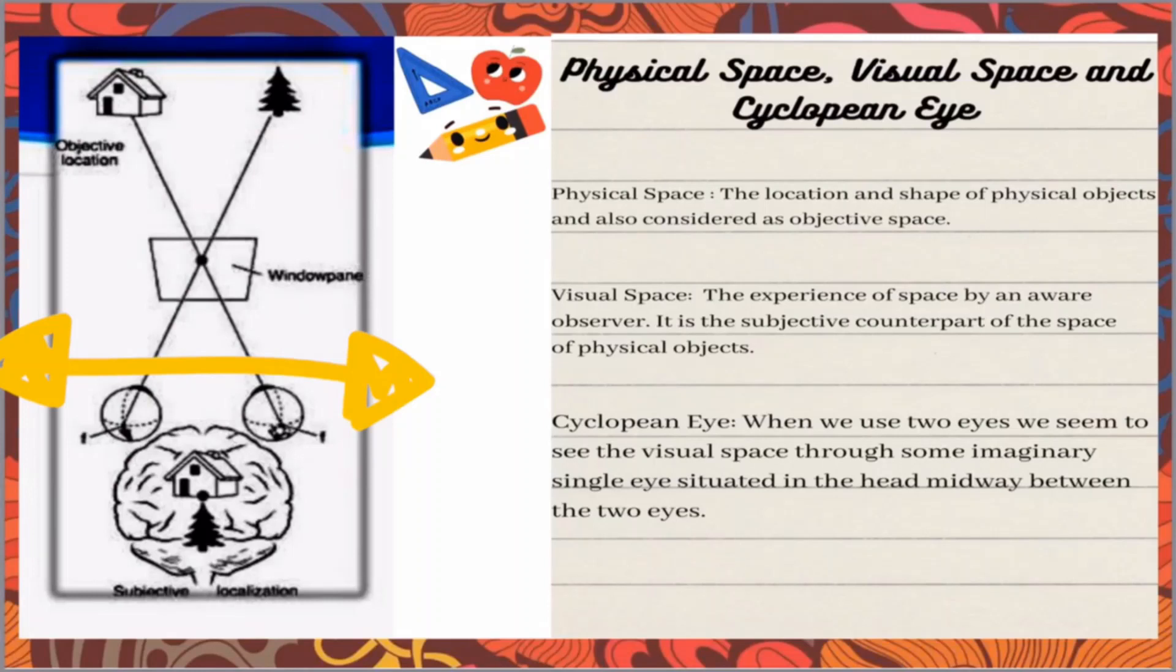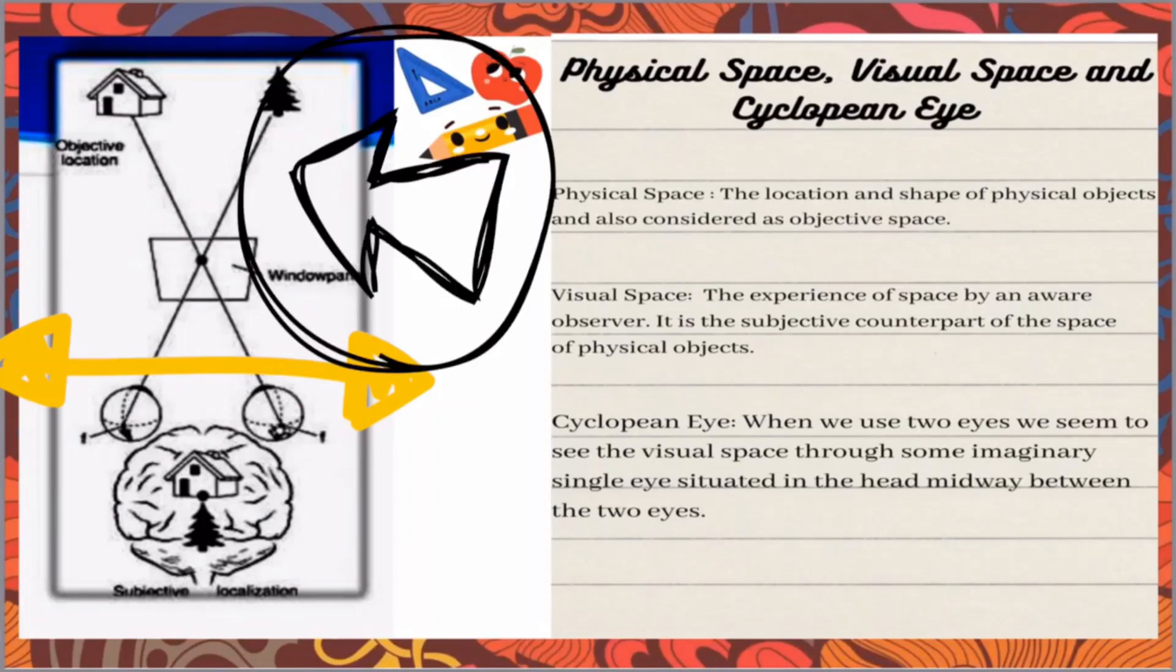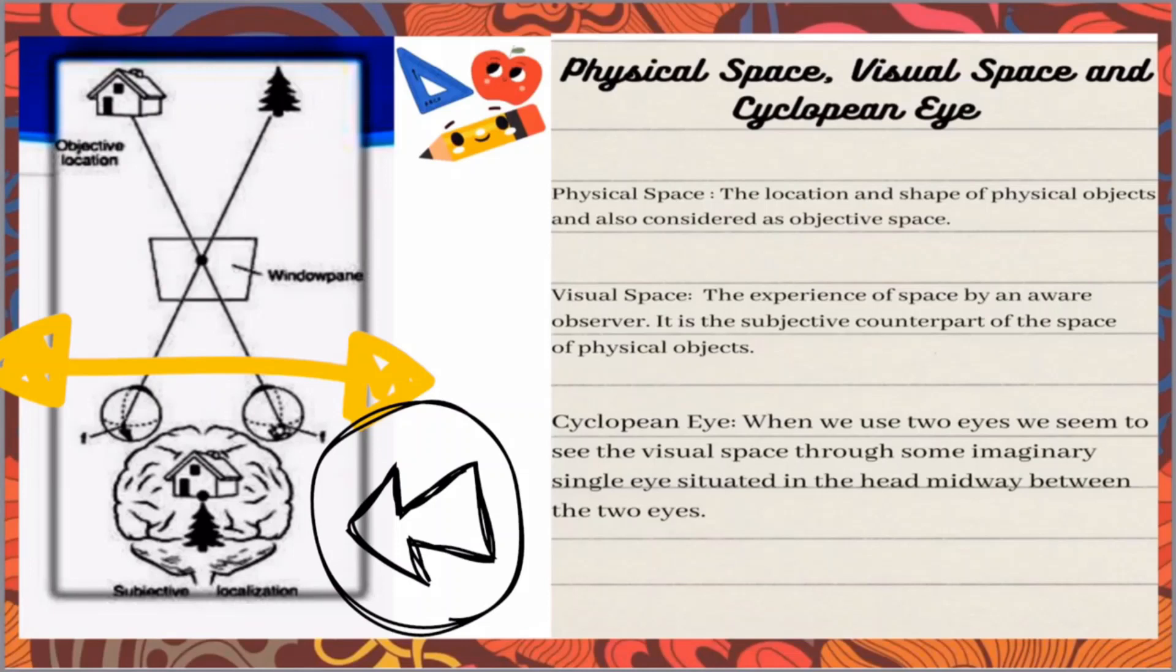So now let's look into the theory portion. The physical space is the location and shape of physical objects and also considered as the objective space. Visual space is the experience of space by an aware observer. It is the subjective counterpart of the space of physical object. So in short, physical space is nothing but our visual field, this outside environment which we can see, and visual space is somewhere in the brain where images are formed.